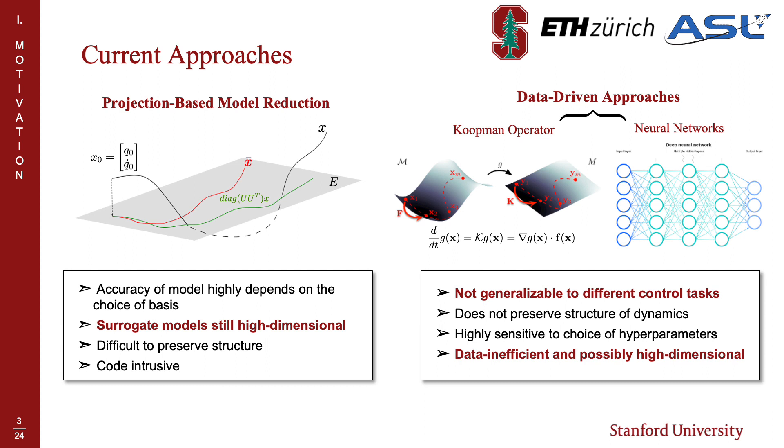Several approaches have been proposed in literature to address these challenges, such as projection and learning-based methods. In projection-based methods, one seeks to find a subspace that approximates the dominant behaviors of the system and to project the high-dimensional governing equations down to that subspace. The equation-free approaches attempt to learn the dynamics of the system from observed state transitions. Popular approaches include learning finite-dimensional approximations of the Koopman operator or learning the dynamics of the system using a neural network.